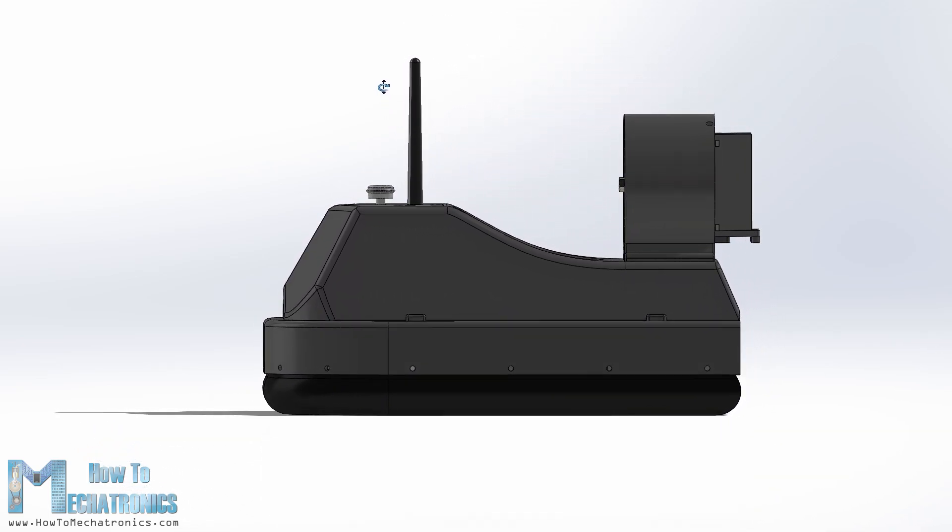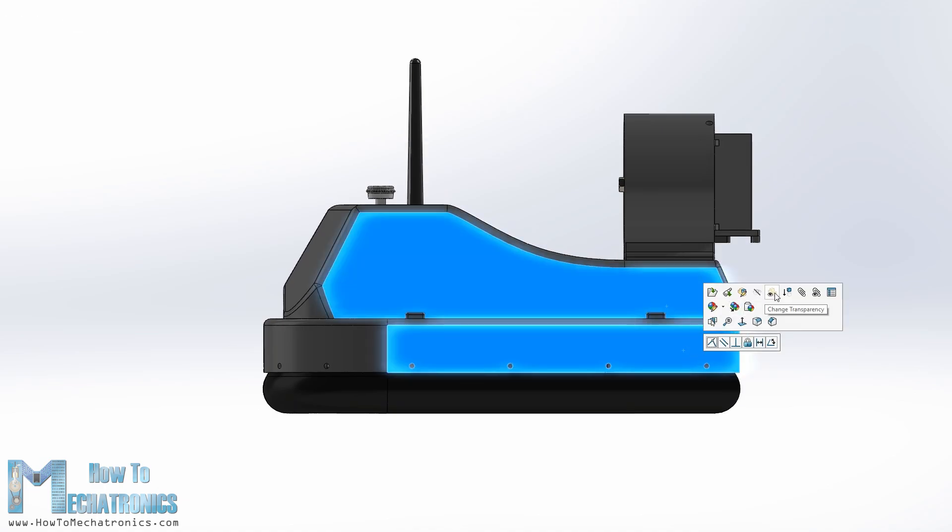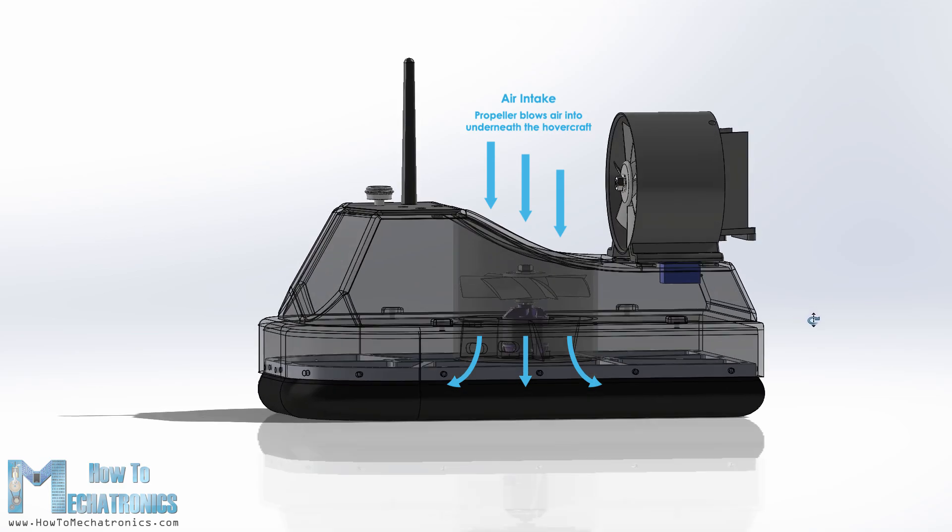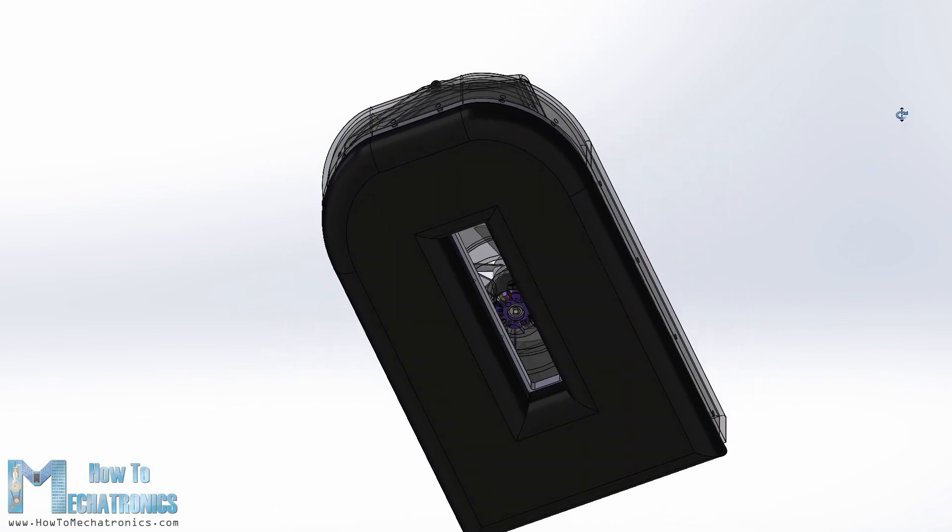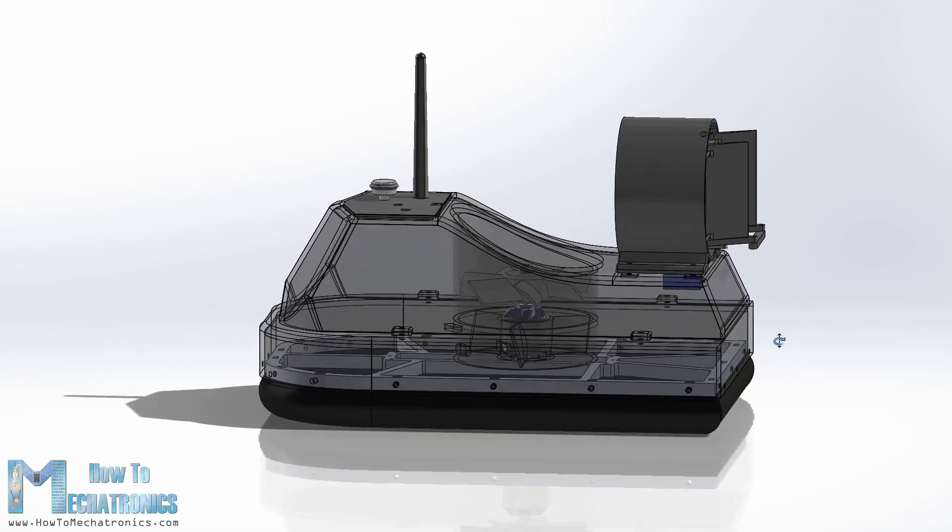So the basic working principle of a hovercraft is that the craft is lifted by a cushion of air. The central propeller blows air underneath the craft, which inflates a skirt made out of soft material. When the air pressure in the skirt is high enough, the craft gets lifted. The constantly supplied air escapes from the middle of the craft, between the skirt and the ground, which creates additional lift and also reduces the friction between the hovercraft and the ground.